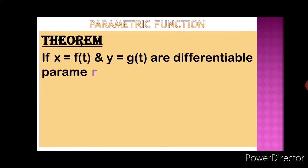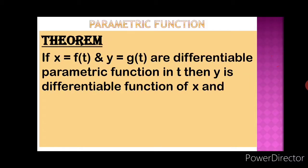Statement of the theorem: If x = f(t) and y = g(t) are differentiable parametric functions in t, then y is a differentiable function of x — obtained by eliminating t from the two equations. The relation between the derivatives is: dy/dx = (dy/dt) / (dx/dt), provided dx/dt ≠ 0. Remember, we cannot simply cancel dt from numerator and denominator because the notation represents d/dt applied to y and x respectively.